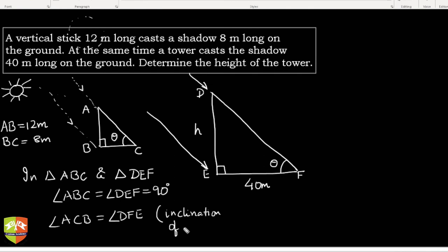Here. Now, therefore, triangle ABC is similar to triangle DEF. What is the reason? By AA similarity. So this is done. The moment this is done, I can say AB by